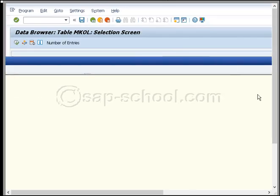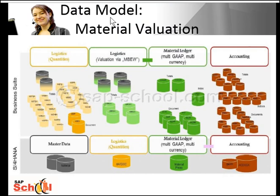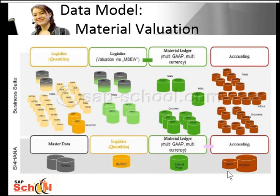Another key data model that has changed drastically is the data model for Material Valuation. This complex Business Suite model has now been replaced by the simplified S4 HANA logistics model, leaving only four tables with no redundancies. There is clear separation of master data from transactional data, with simple processes and only one valuation method — the Material Ledger. Throughput is increased as inserts are only on the database level and there are no locks for standard price valuation.